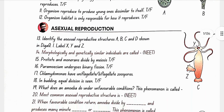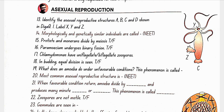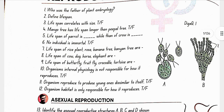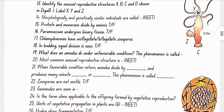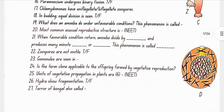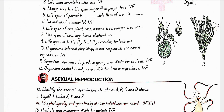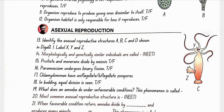Asexual reproduction. Identify the asexual reproductive structures A, B, C and D shown in diagram 1, labeled X, Y and Z. In diagram 1: A is zoospores of Chlamydomonas, B is conidia of Penicillium, C is buds in Hydra, D is gemmules in sponge. X is conidia, Y is mouth, and Z is bud. Morphologically and genetically similar individuals are called clones.